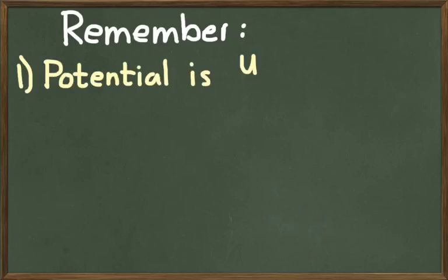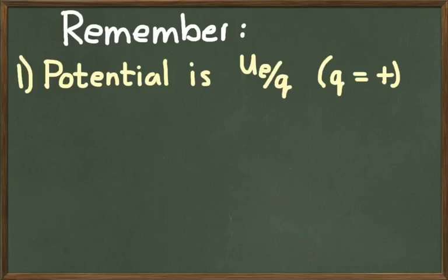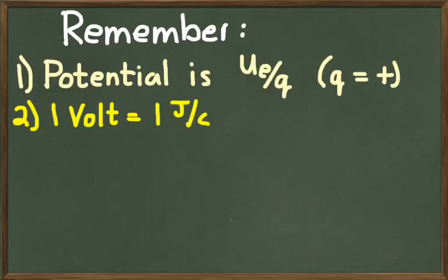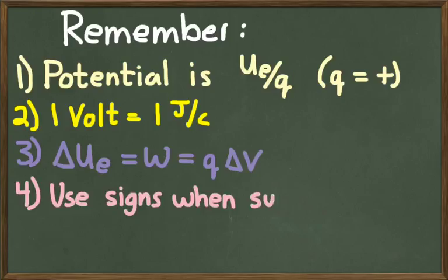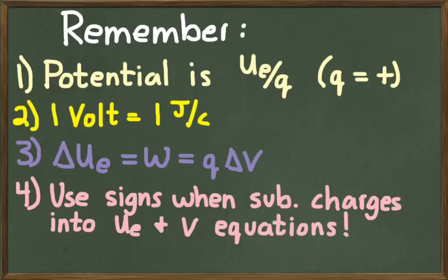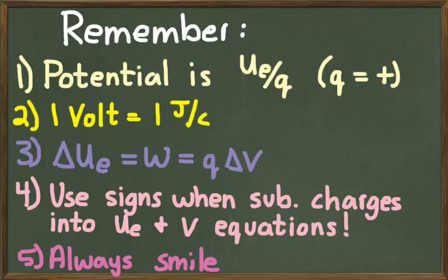I think we've stumbled our way through enough electric potential. Remember a couple of things. The definition of potential is energy over charge. And when we define that, we assume that that test charge is positive. Secondly, remember that a volt is a joule per coulomb. That will help you understand the units. Third, remember that we can relate work to change in energy, which means we can relate work to change in voltage. Fourth, remember to use the signs for the charge when you substitute them into equations for energy and electric potential. And lastly, and most important, always remember to smile. So that's the end of this lesson. I think we've done enough. We will obviously do a little bit of practice and put this into context during class next time. So be prepared for that. And y'all have a great day.